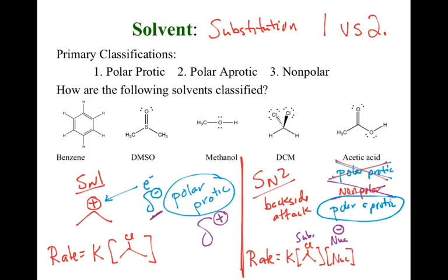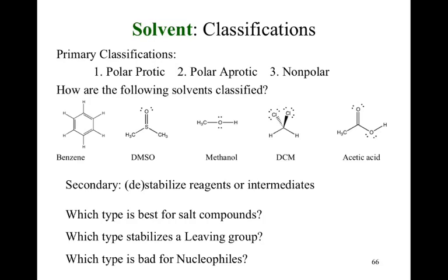When you're looking at your solvent, think about the stabilization or destabilization of your reagents or intermediates. Consider which type of solvent is best for salt compounds, what stabilizes a leaving group, and what is bad for nucleophiles. It's a careful dance in deciding how to get all of those things to come together at once. Sometimes in SN2 we're just stuck dealing with what we've got, but in SN1 we have a perfect target to stabilize our carbocation with a polar protic solvent.